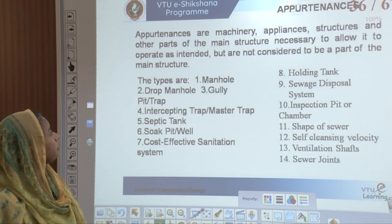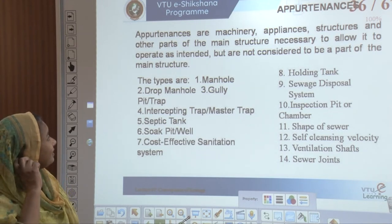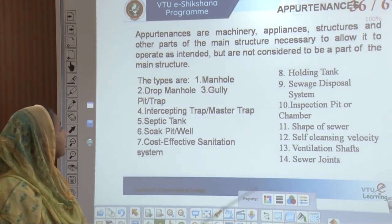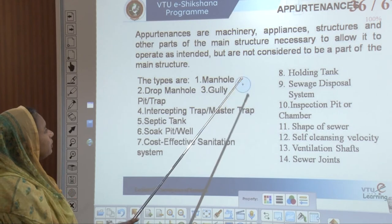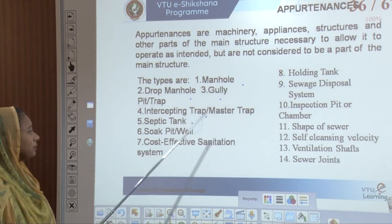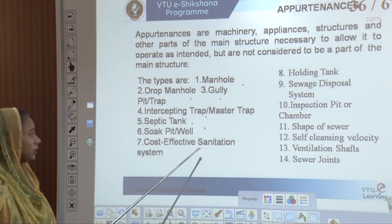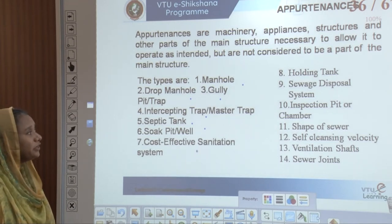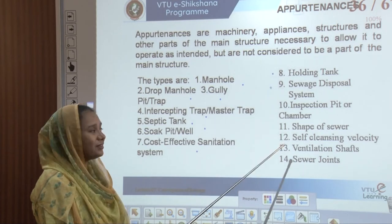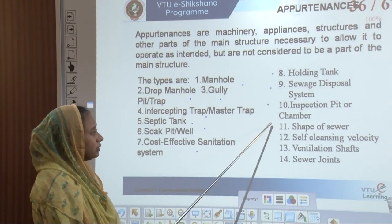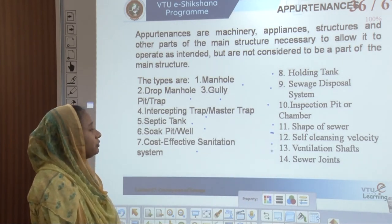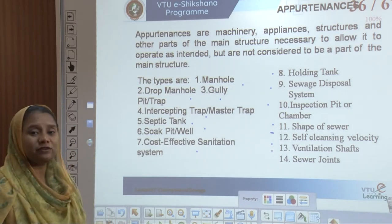The various appurtenances are basically structures that allow the operational capacity of a sewer. The main types of appurtenances are: manhole, drop manhole, gully pit or trap, intercepting trap or master trap, septic tank, soak pit or soak well, cost effective sanitation system, holding tank, sewer disposal system, inspection pit, shape of the sewer, self-cleansing velocity, ventilation shafts, and sewer joints.